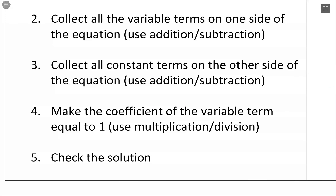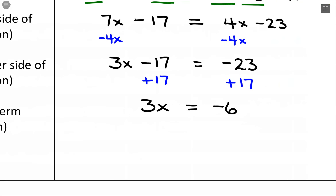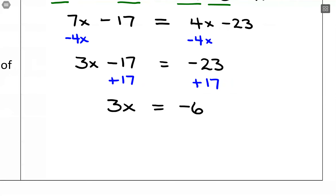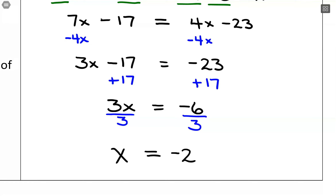Step 4: make the coefficient of the variable term equal to positive 1, using multiplication or division. I want to get x completely isolated so I have just a positive 1 out front. Right now x is being multiplied by 3, so to undo that I divide by 3 on both sides. That gives us x equals negative 6 divided by 3, which is negative 2.